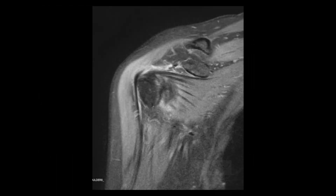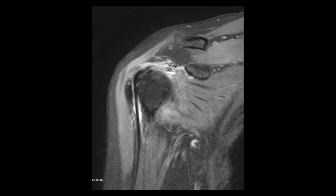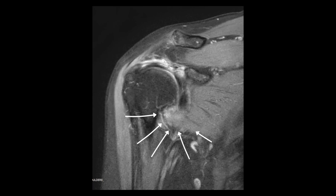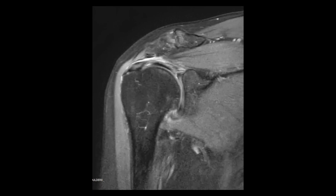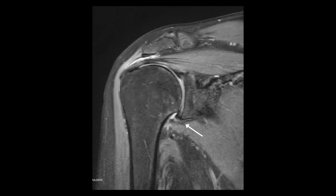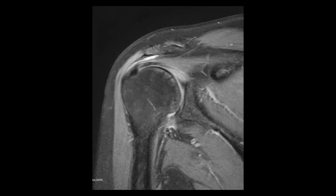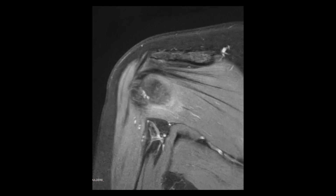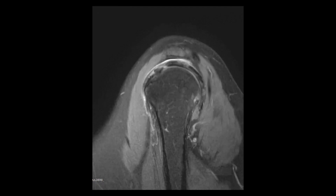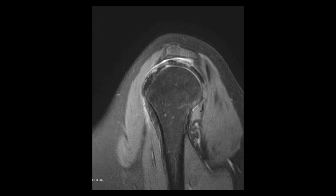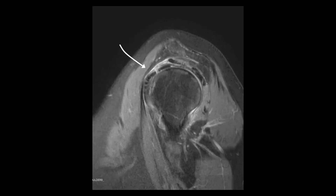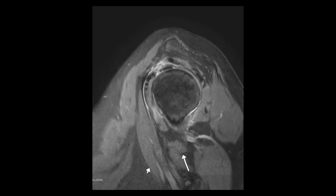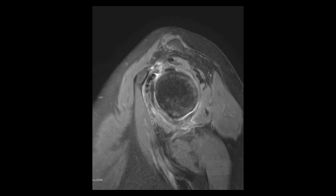Long axial view of infraspinatus muscle and tendon. We are watching a coronal T2-weighted image with fat saturation of the shoulder joint. There is swelling and high-signal intensity of the anterior aspect of the inferior capsule. We are looking at the sagittal T2-weighted image with fat saturation. There is localized high-signal intensity in the middle coracohumeral ligament.